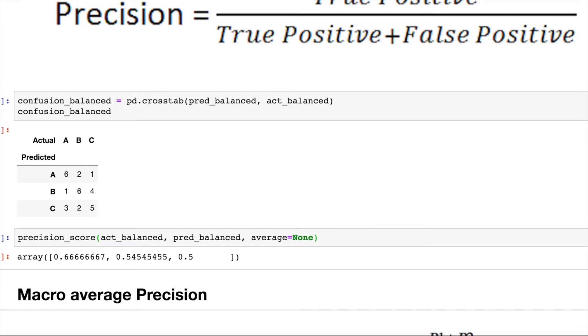I get the ratio of true positives for class A upon the ratio of true positives of class A plus false positives of class A. The precision for class A is 0.67. The precision for class B is 0.54 and the precision of class C is 0.5 which you can verify from this given confusion matrix. Now, what exactly is macro precision?